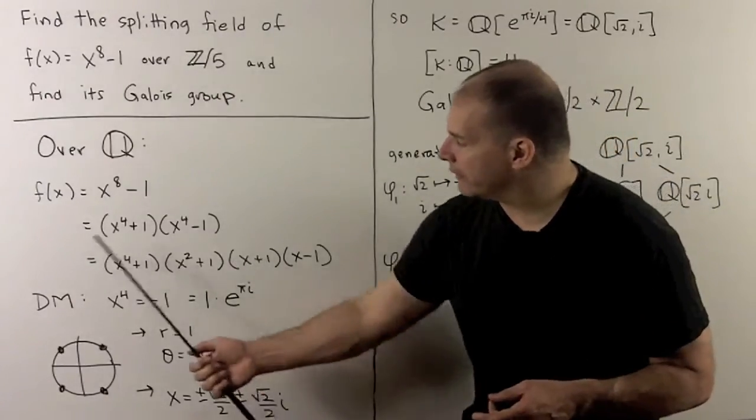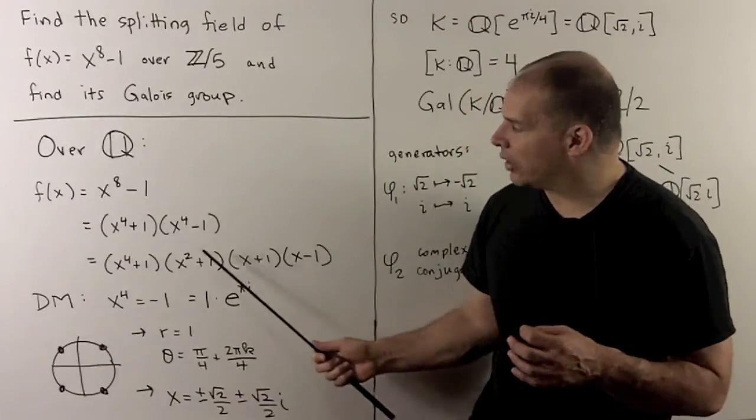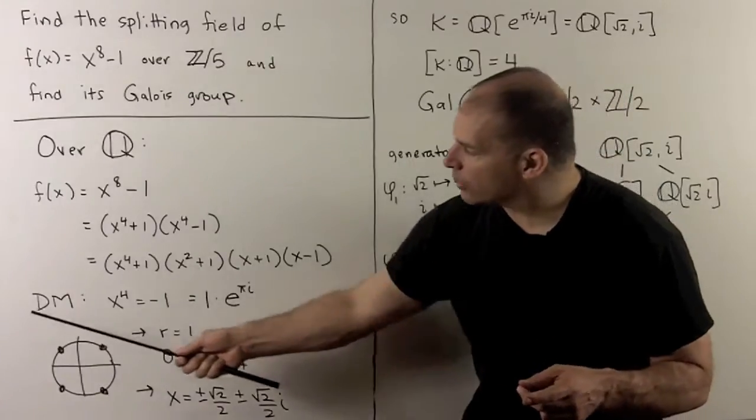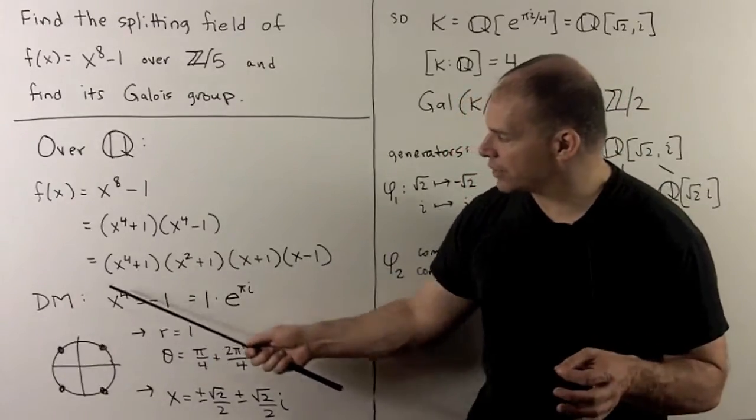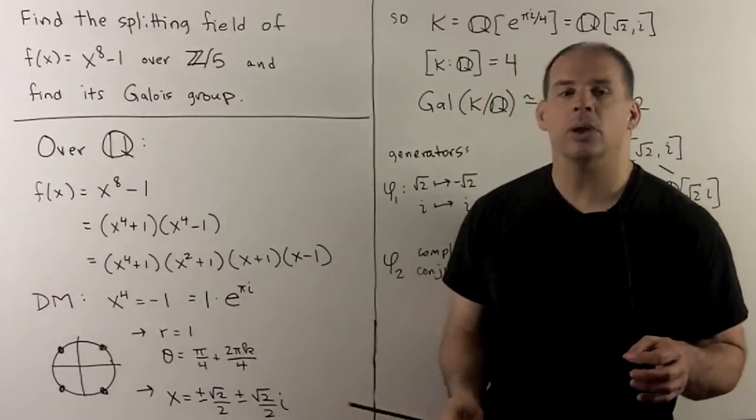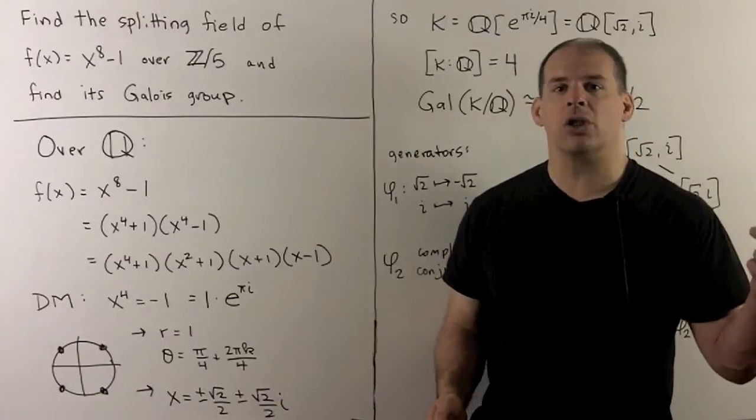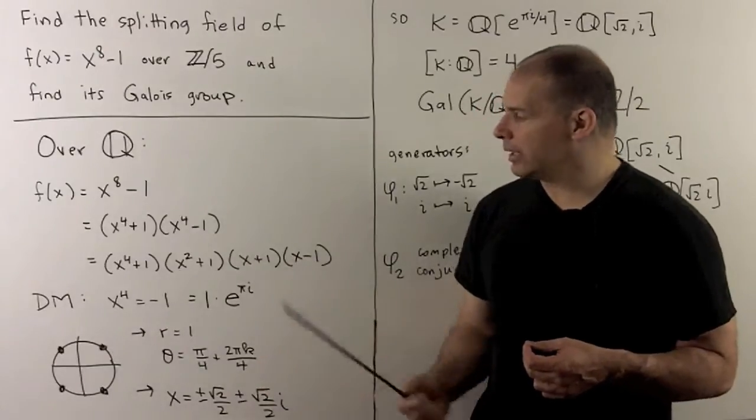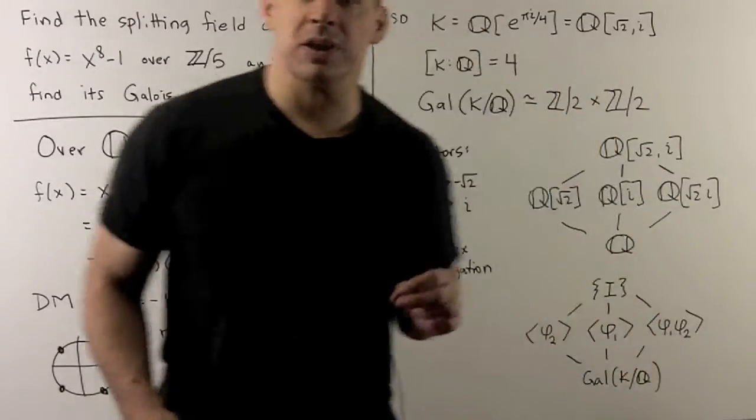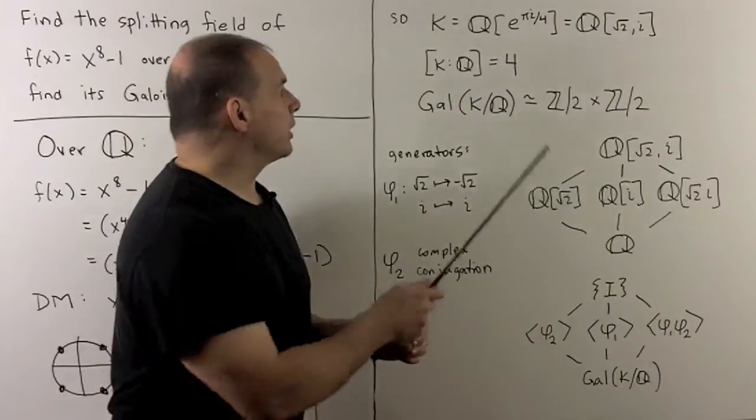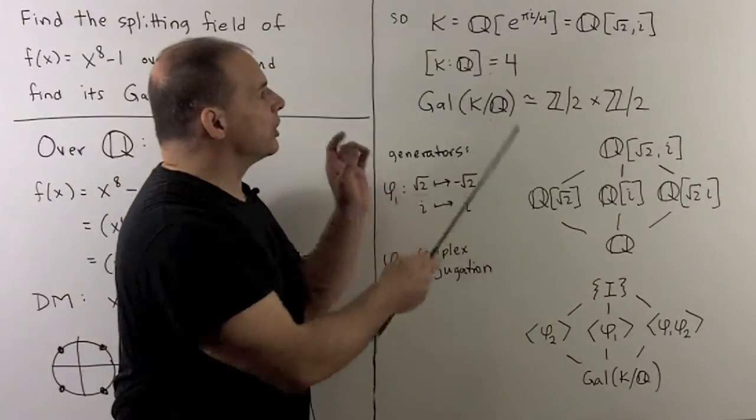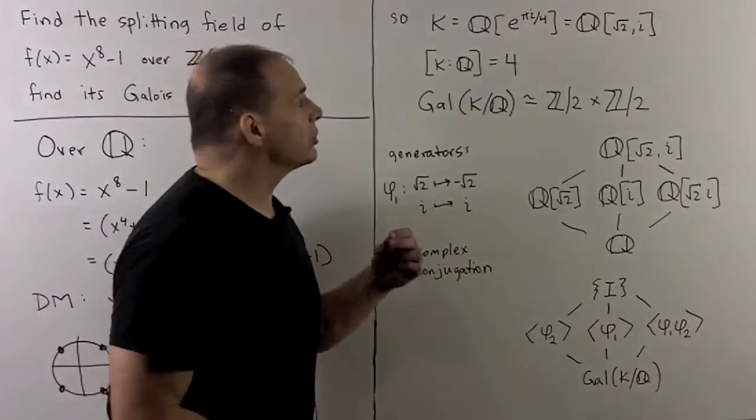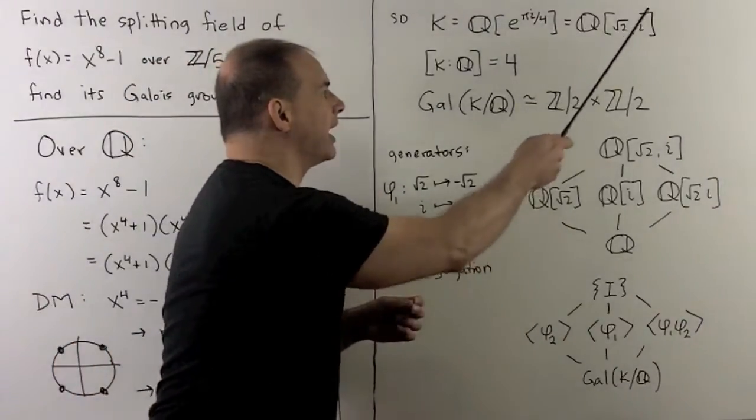Now, if I want the splitting field, we're just going to add in all roots of these polynomials. So I put in plus or minus i, and using De Moivre's theorem, if we solve x^4 = -1, we're just going to have the points in the unit circle at the proper multiples of pi over 4. That means, for the splitting field of this polynomial, we're just looking at - we take the rationals and adjoin e^(πi/4). And then that's the same as taking the rationals and adjoining √2 and i.